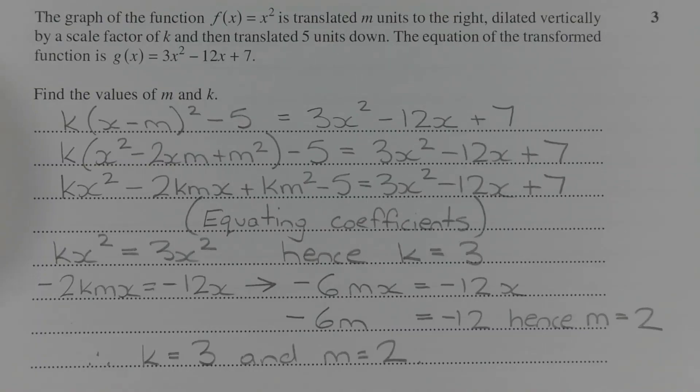Expressing the transformed function g of x equals 3x squared minus 12x plus 7 in terms of m and k, we have k times x minus m squared minus 5 equals 3x squared minus 12x plus 7.